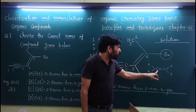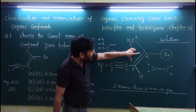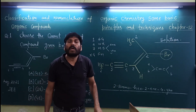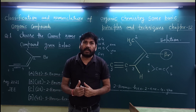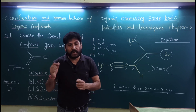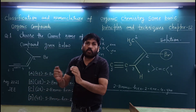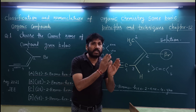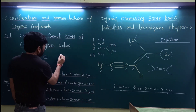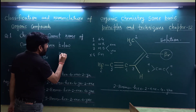इस compound में देखिए: C double bond C है — इससे two different groups attach हैं, और दूसरे C से भी two different atoms/groups attach हैं। ऐसी condition में हम Z/E nomenclature करते हैं — cis/trans नहीं, क्योंकि चारों groups different हैं। Z का मतलब होता है 'Zusammen' यानि together (same direction), और E का मतलब होता है 'Entgegen' यानि opposite direction।